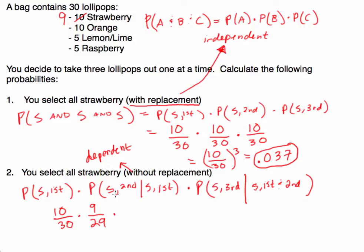For the third pick, keeping in mind we already selected a strawberry first and second, there are now only 8 strawberries possible out of a total of 28 lollipops. These are dependent trials: my second selection's probability has changed — it changed given the result of my first pick. I took a strawberry out, so now there are only 9 out of 29.